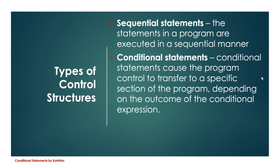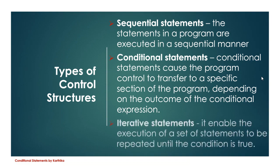The second type is the conditional statement, where we skip a particular part of the program based on a condition. When the condition is true one part works; when the condition is false another part works. The third type is iterative statements, which are used to repeat a particular part of a program until the condition becomes false. So the three types of control structures are: sequential, conditional, and iterative.